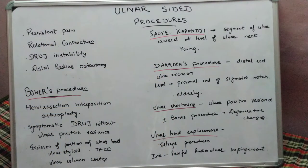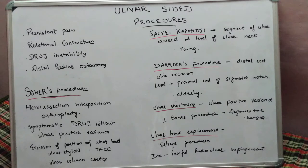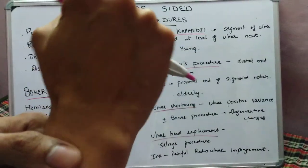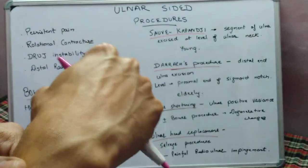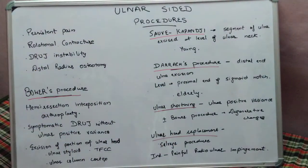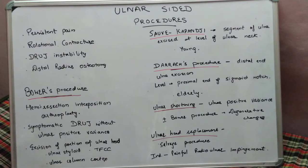Third is the instability of the distal radioulnar joint. Fourth, it is also done in conjunction with the distal end radius osteotomy. After doing the distal radius osteotomy in cases of malunion, we check if on-table rotation is possible. If rotation is not possible, we can go for the ulnar-sided procedures on the table itself.